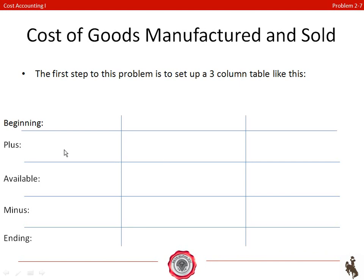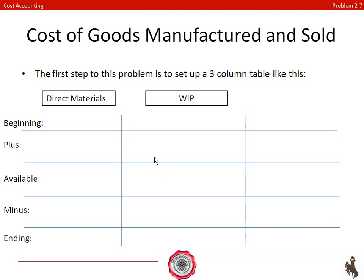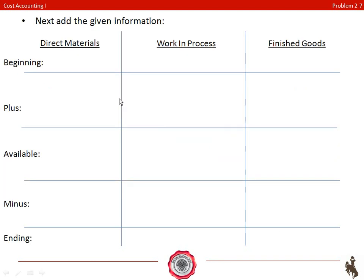This is a basic problem that shows you how to figure out cost of goods manufactured and cost of goods sold. The first step is to set up a three-column table like you see here. Our first column is direct materials, our middle column is work in process, and our last column is finished goods inventory. The next step is to add our given information into our columns.